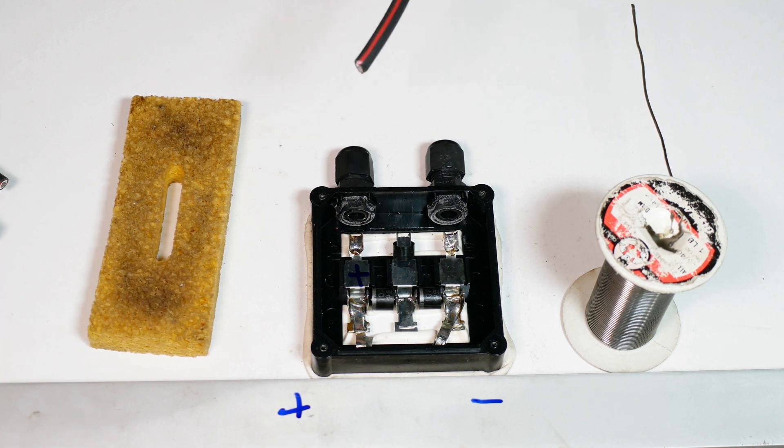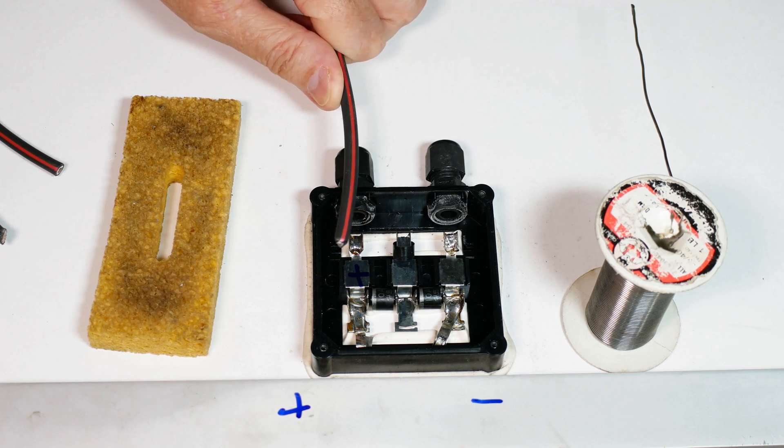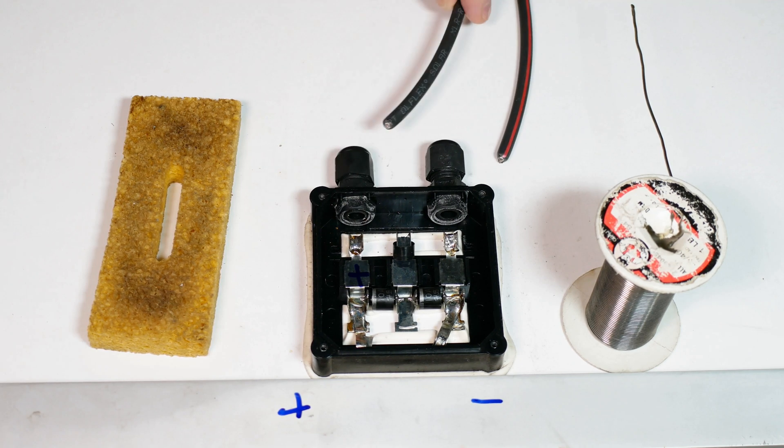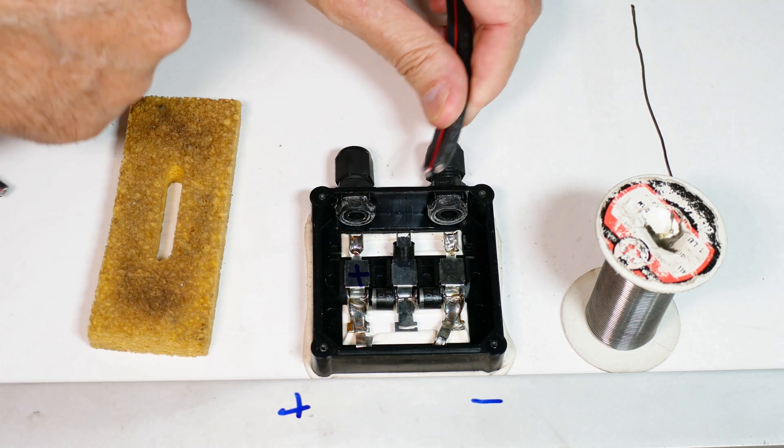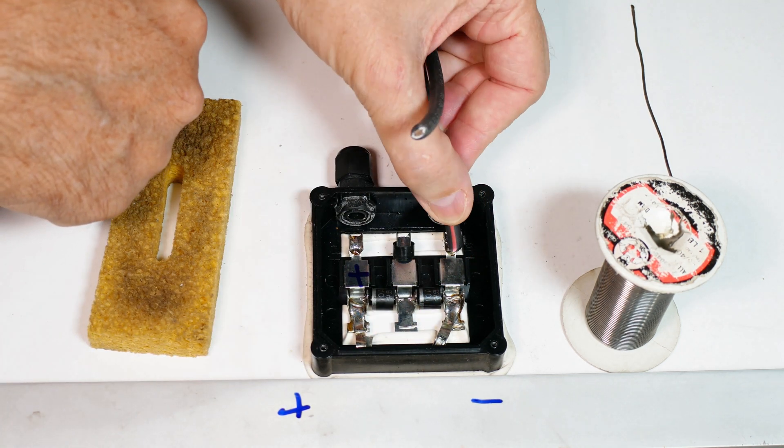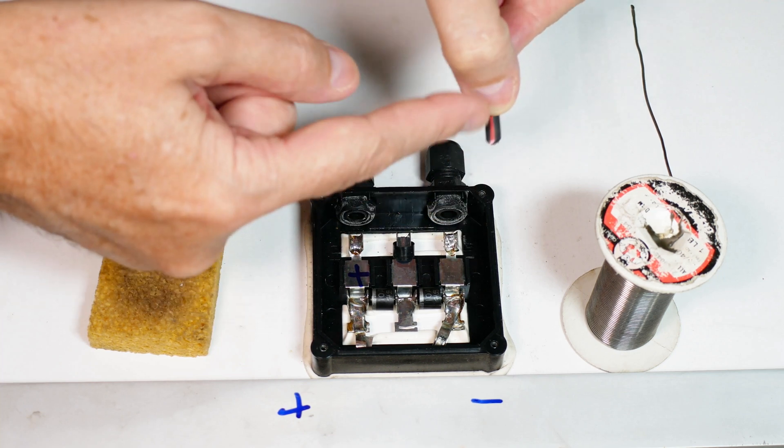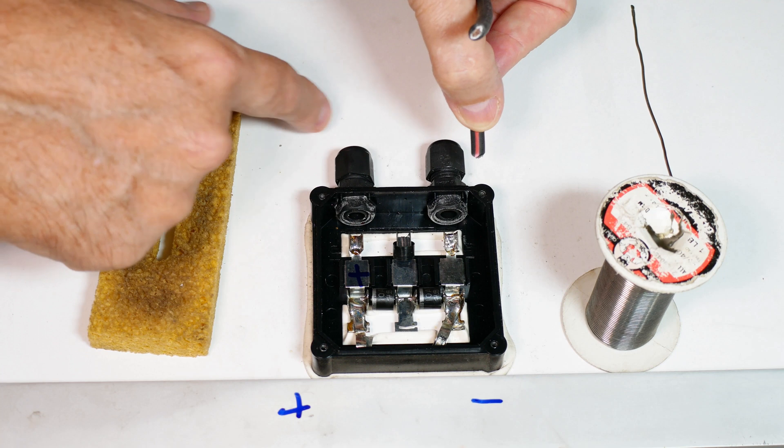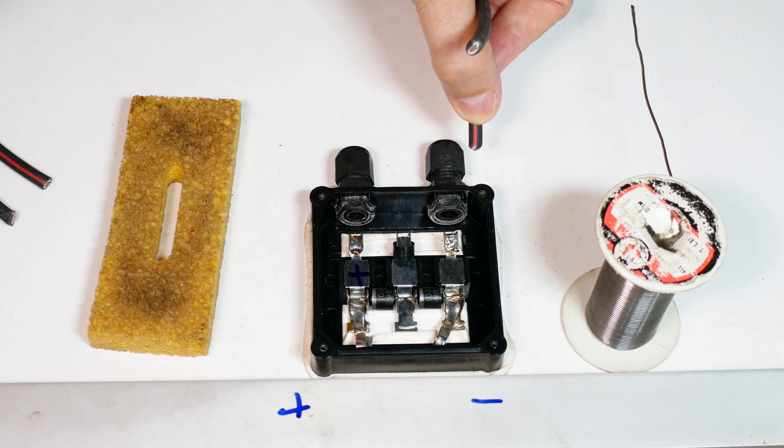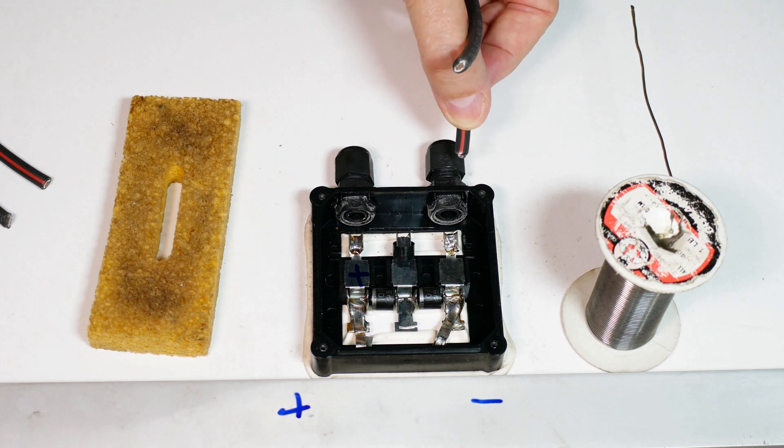Our red wire will be the positive and our black wire will be the negative. We'll get these stripped off. We're going to need just like that much, not very much, just enough to come in contact with this. I will strip that and I'll be right back.